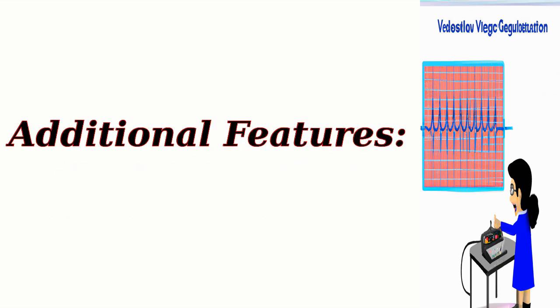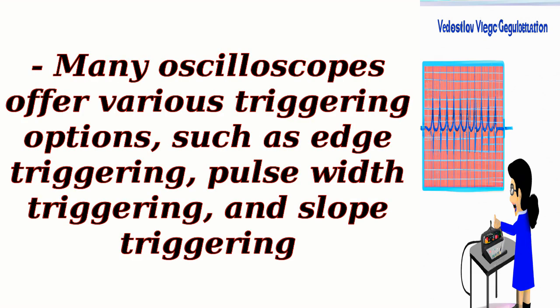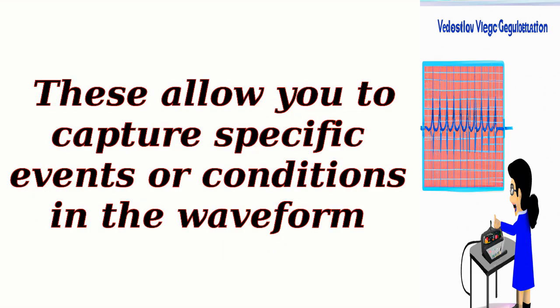Additional Features: many oscilloscopes offer various triggering options, such as edge triggering, pulse width triggering, and slope triggering. These allow you to capture specific events or conditions in the waveform.